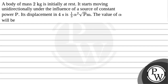Hello. Let's read the given question. The question states that a body of mass 2 kg is initially at rest. It starts moving unidirectionally after the influence of a source of constant power p. Its displacement in 4 seconds is 1 divided by 3 alpha squared times square root of power p meters. The value of alpha will be?